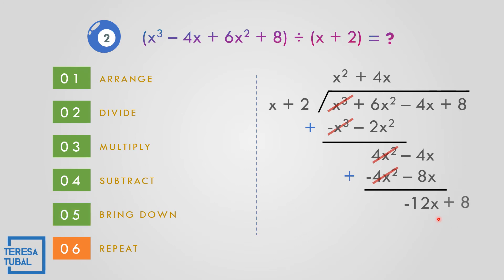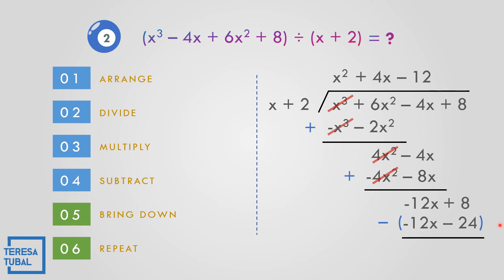Divide: negative 12x divided by x is negative 12. Multiply: negative 12 times x is negative 12x, and negative 12 times positive 2 — unlike signs, negative times positive is negative — gives negative 24. Subtract: distribute the negative, so this becomes positive 12x and positive 24. Proceed to addition: 12 minus 12 is 0, and 24 plus 8 gives 32.